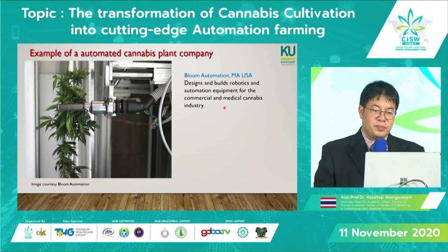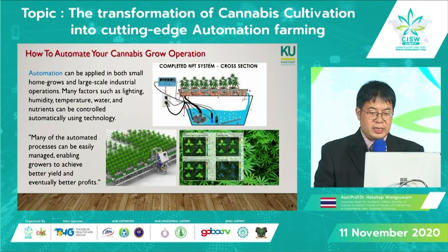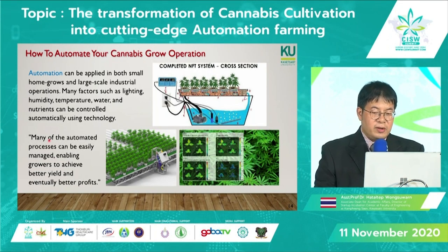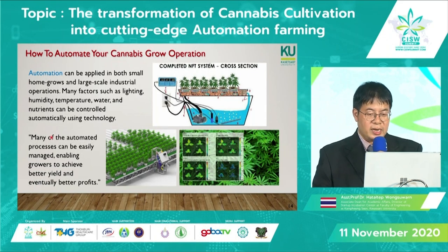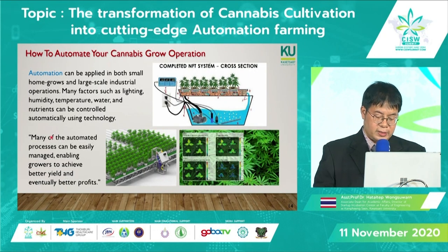One more example is Bloom Automation in the USA, which designs and builds robotic and automation equipment for the commercial and medical cannabis industry. In summary, automated automation can control many growing factors such as light, temperature, water, and nutrients, and helps growers achieve better yield and profit.